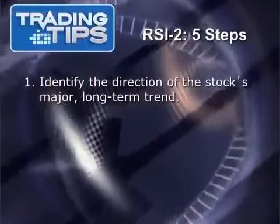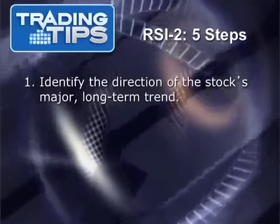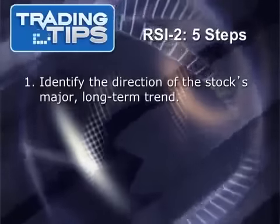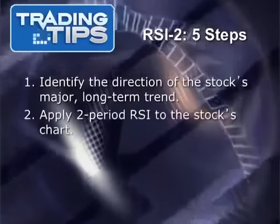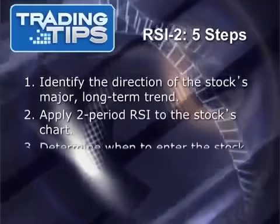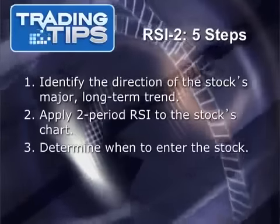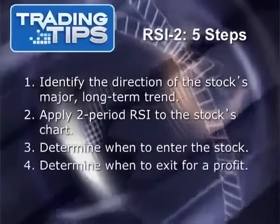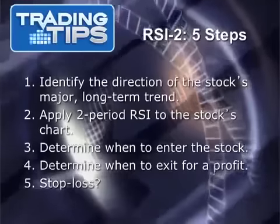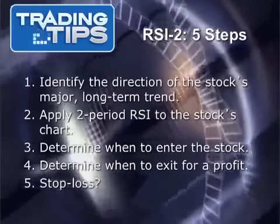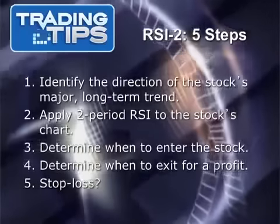There are five steps in the RSI2 strategy. One: identify the major long-term trend. Two: apply a two-period RSI. Three: determine when to enter the position. Four: determine when to close the position for a profit. And five: determine your stop loss. We'll look at each of these steps individually on the following slides.